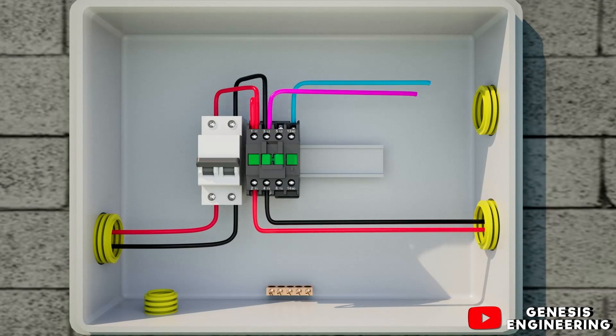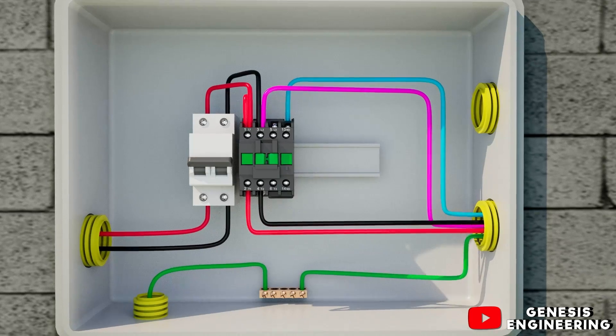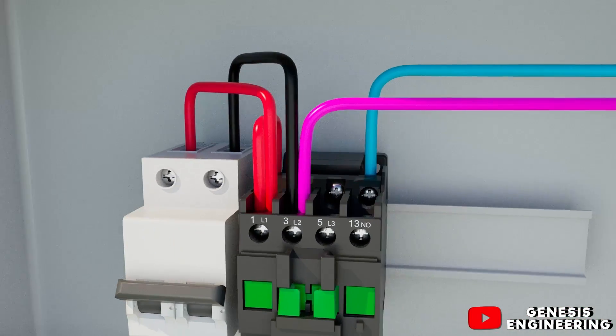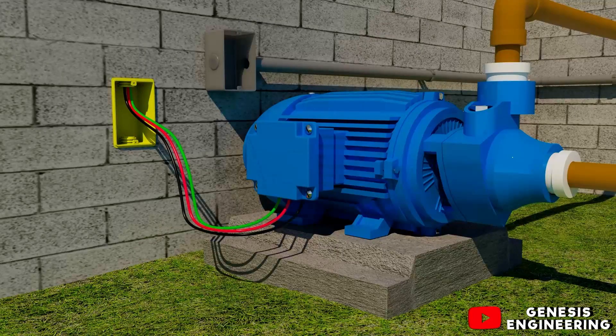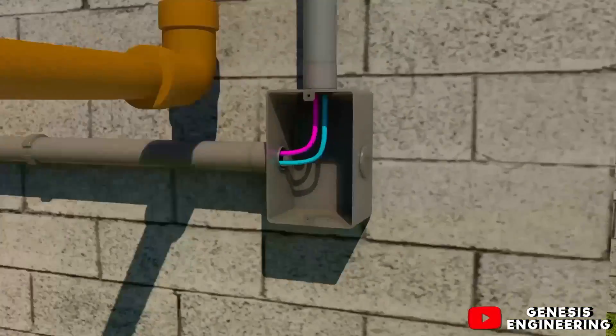In this video we will show you how to install a float switch. For those who don't know, a float switch controls the water level, turns on the pump when the water tank is empty and turns off the pump when the water tank is full.